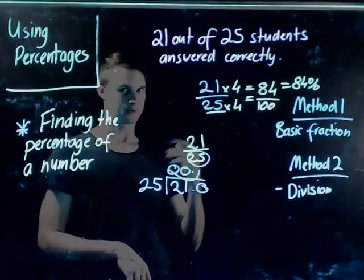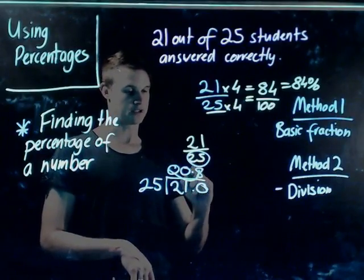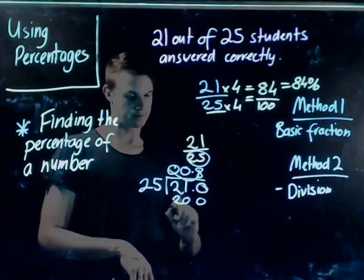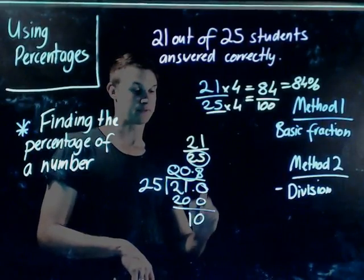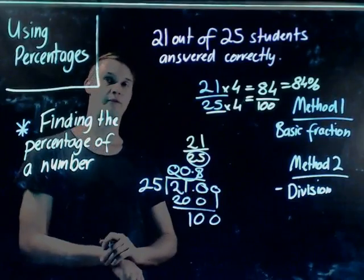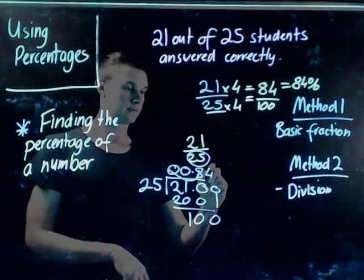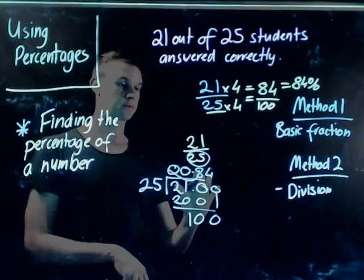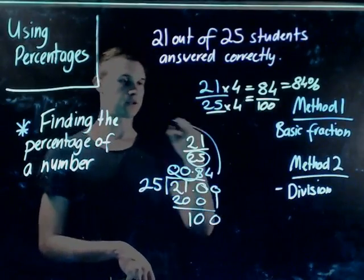So 8 times, which makes 200. That leaves 10 left over. I'll bring the 0 down here. How many times does 25 go into 100? It goes 4 times, which makes 100.